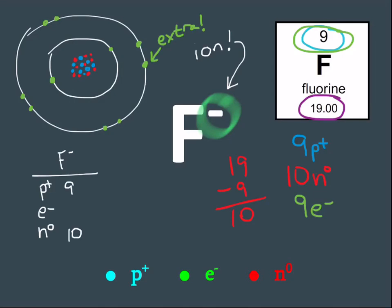Let's draw this out. Regular nine protons. Those numbers never change. Ten neutrons. Now there are ten electrons. Fluorine's often got an extra electron.